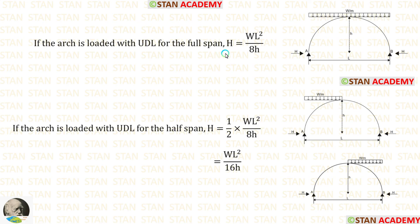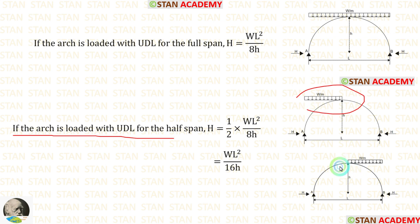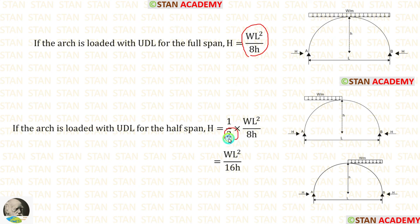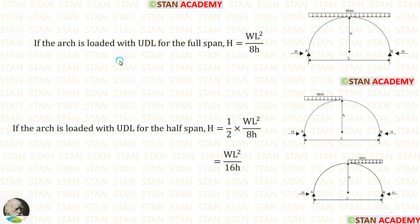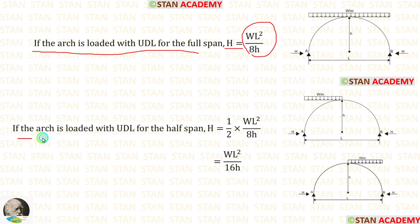We have derived the expression for the horizontal thrust when the arch is loaded with UDL for the full span. If the arch is loaded with UDL for the half span, we divide the horizontal thrust formula by 2, giving WL² by 16h. So: full span UDL gives H equals WL²/8h, and half span UDL gives H equals WL²/16h.